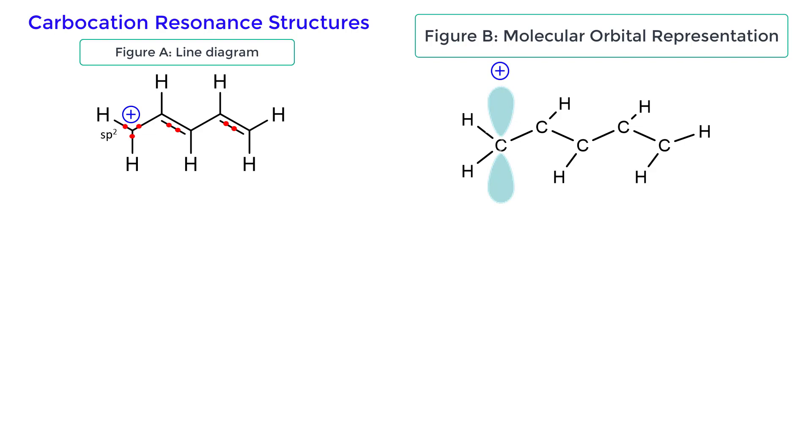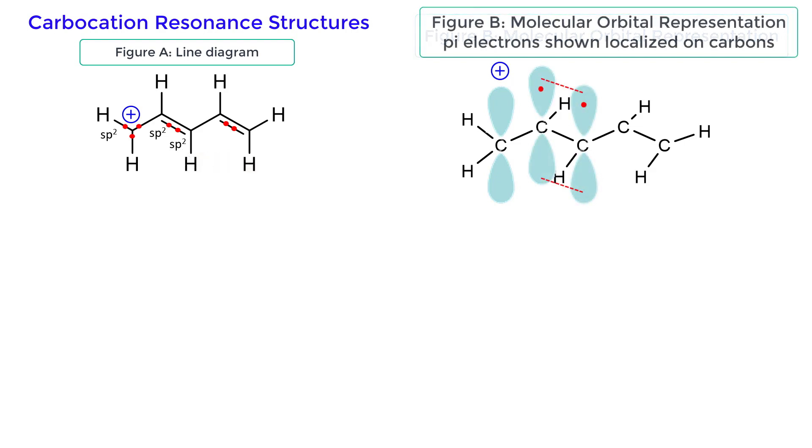For this specific compound, the carbon bearing the positive charge is adjacent to a pi bond. Each carbon in the pi bond is sp2 hybridized. The pi bond is formed from the sideways overlap of two adjacent p orbitals, as shown in figure B.